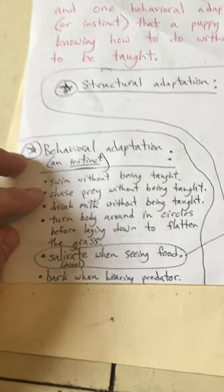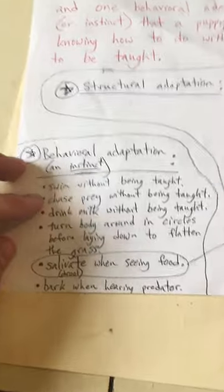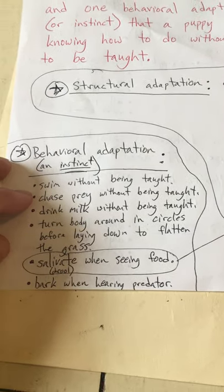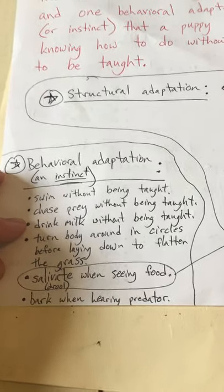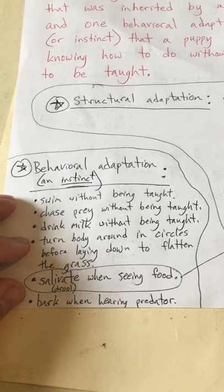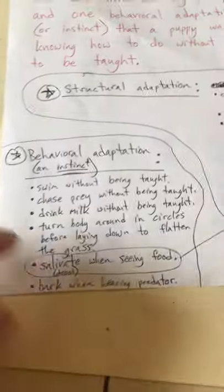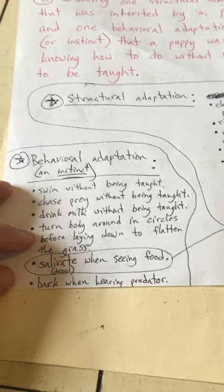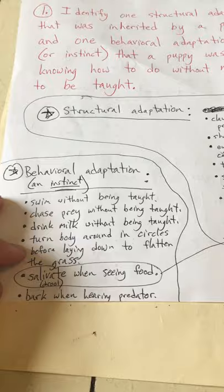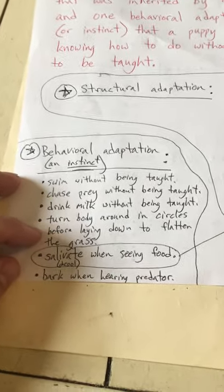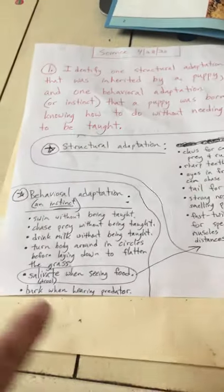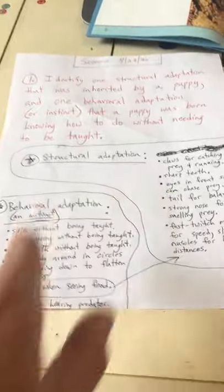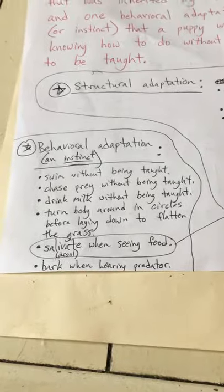Puppies know to chase prey without being taught. If Charlie, when it was a puppy, saw a squirrel, it would have chased it — and nobody showed him how to do that. They also know how to drink milk without being taught; a puppy is born knowing to go to its mother and drink milk. And if you've ever noticed how a dog will walk around in circles before it lays down — that's an adaptation. They turn in circles to flatten the grass, because a long time ago they didn't live in a house on a couch; they had to sleep in tall grass. It's an instinct they're born knowing.